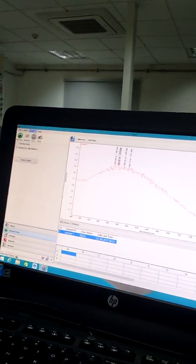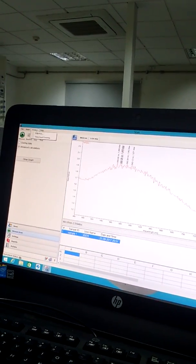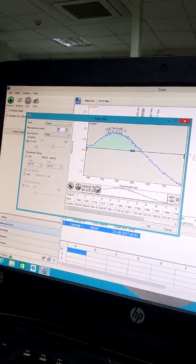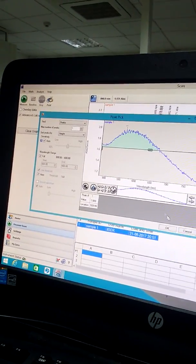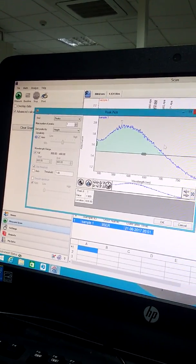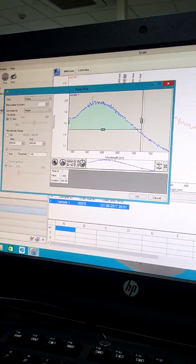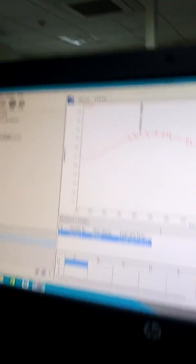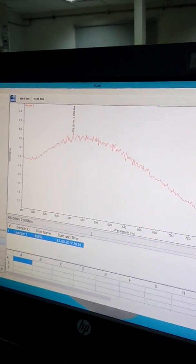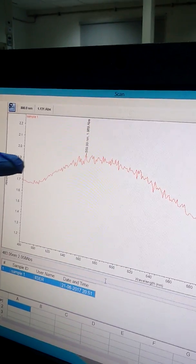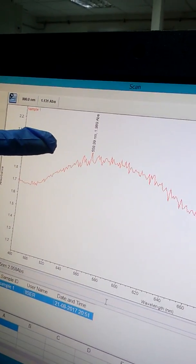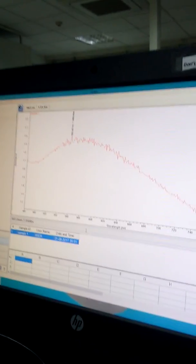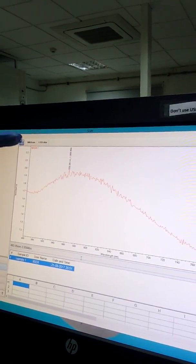Check lambda max or lambda SPR in the analysis. For this spectrum, lambda max is 559.99 nm. This is the surface plasmon resonance spectra for gold nanoparticles. Compare this lambda max value with the literature value.